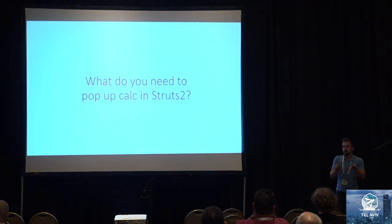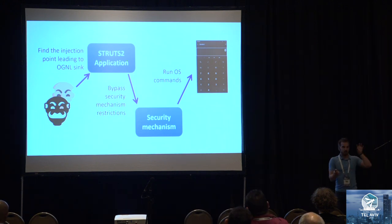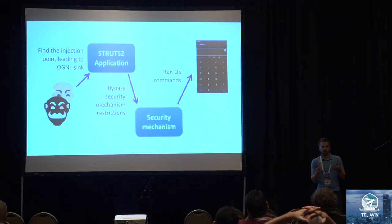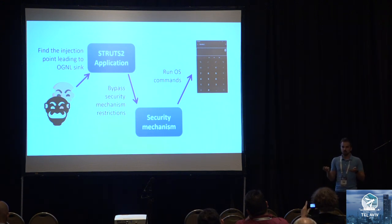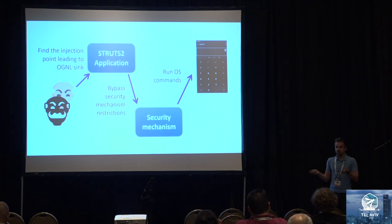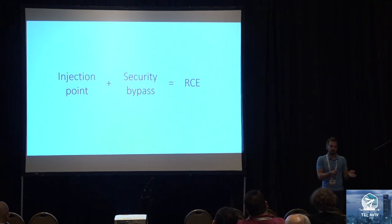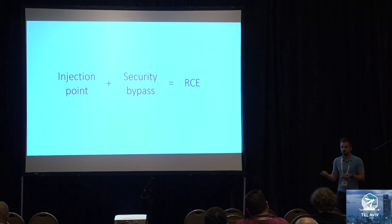So what do you need to pop up calc inside Struts 2? You need to pass through several steps in the pyramid. First, you need to find the evaluation point — a piece of code that will take your user input and evaluate it as an OGNL expression. When you find it, you are blocked by the security mechanism and need to bypass its restriction. Then you reach the raw OGNL that allows you to do anything. If you have the injection point and a way to bypass the security mechanism, you have an RCE in Struts.